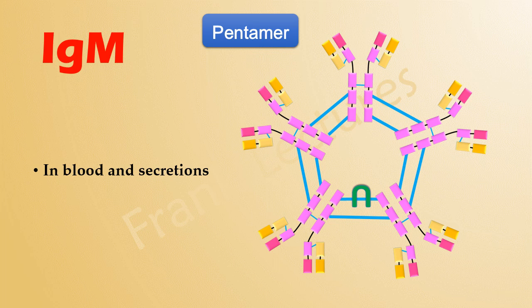As a pentamer, IgM is found in secretions. In pentameric form, five IgM monomers are arranged in a star-like shape. In this shape, the antigen-binding fragments point outward and the Fc fragments are towards the center.